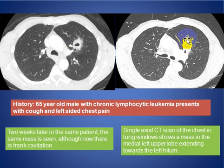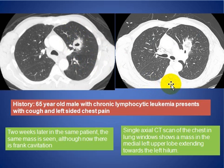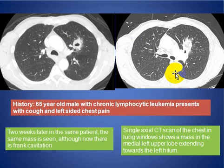This patient with leukemia presented with a cough and left-sided chest pain and had a mass lesion. Two weeks later the mass is cavitating — this can be due to fungal infection, septic emboli, or infiltration by lymphoma.